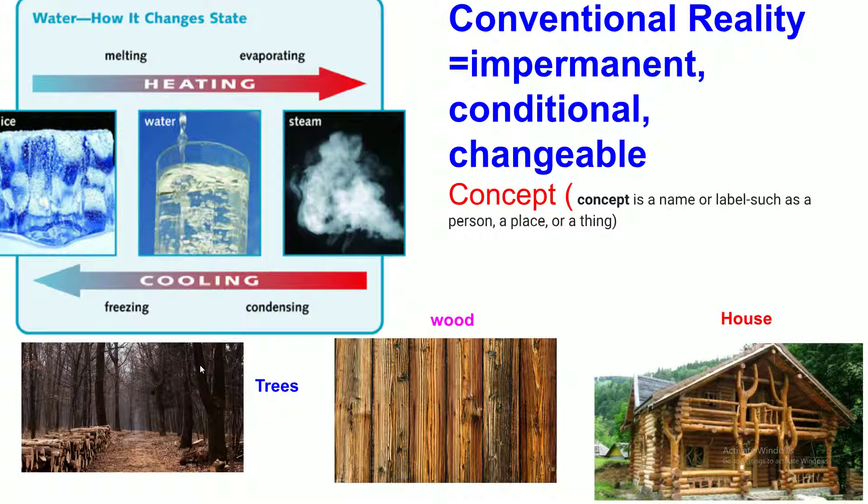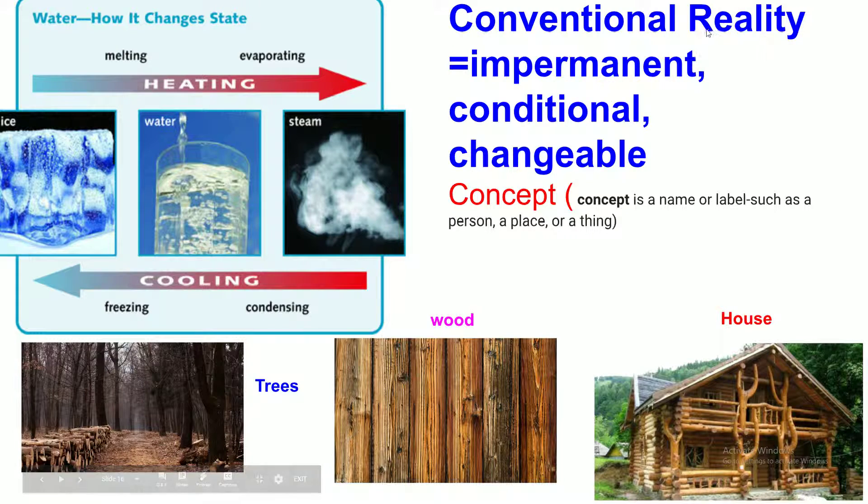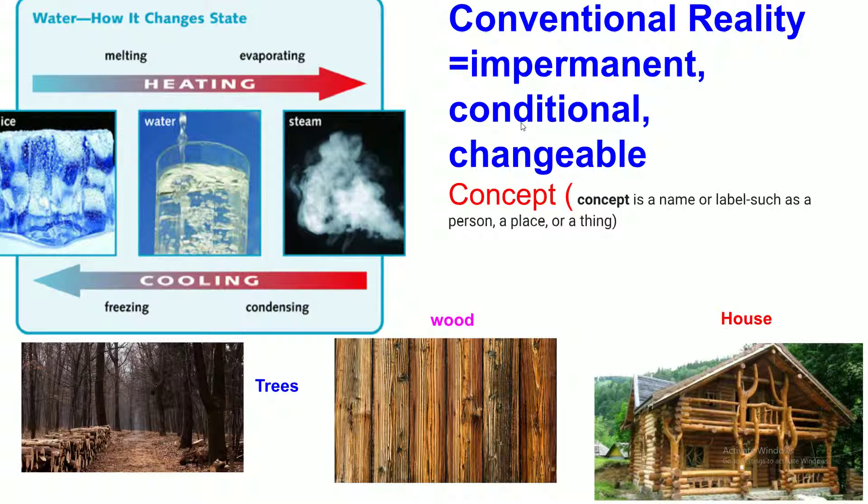Likewise, look in this picture. There's a tree. When you chop it off, it becomes wood, you don't call it a tree. And then you make it slats, and you can use it as a fence, you don't call it wood. And then the wood, you use it for the house. We call it house, we don't call it wood. That is why conventional reality is not permanent, it's conditional. It changes the name when the form changes.